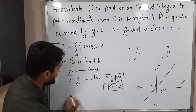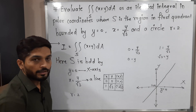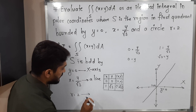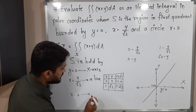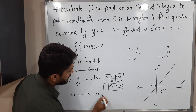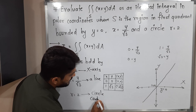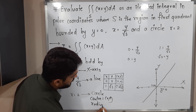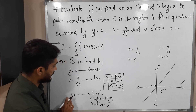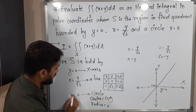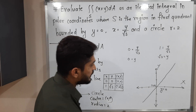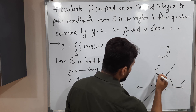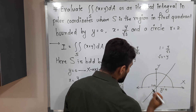The third curve is the circle r equals 2. They have already given the equation of the circle in polar form. This is a standard circle with center (0, 0) and radius 2. Let me draw a rough sketch of the circle with center (0, 0) and radius 2.